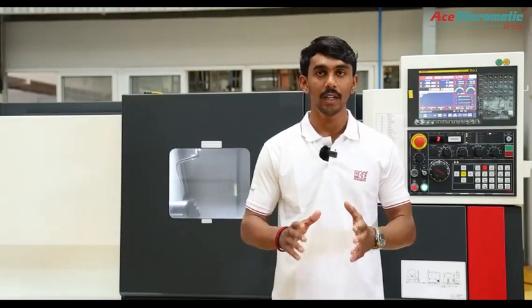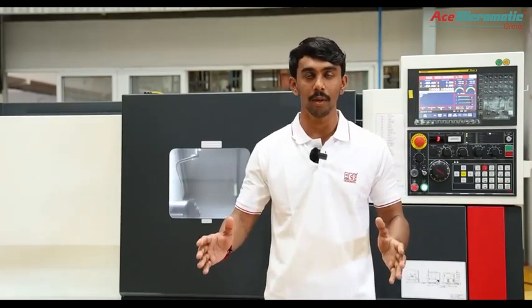The machine will be provided with the swing over bed of 550mm diameter and swing over carriage of 260mm diameter. The machine has a distance between sectors of 615mm.